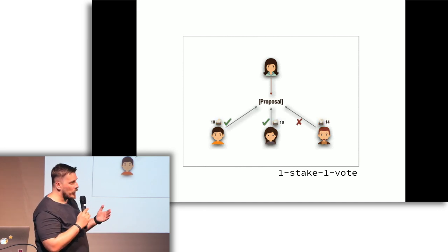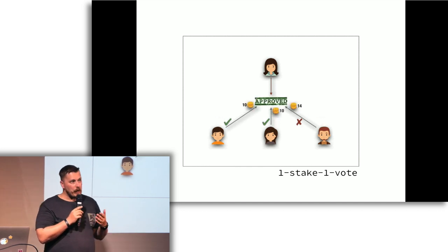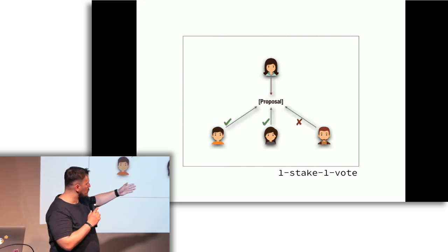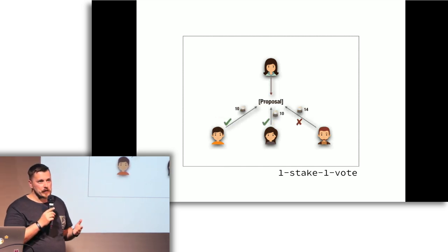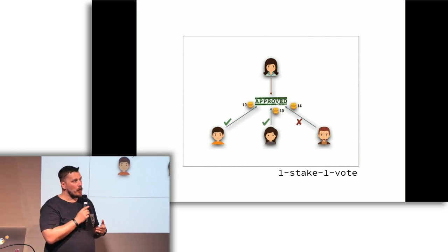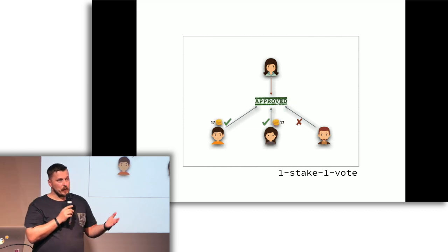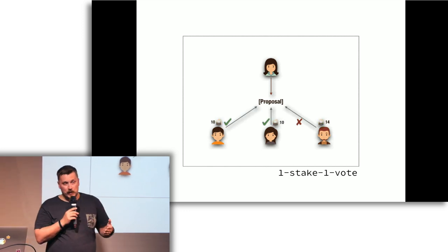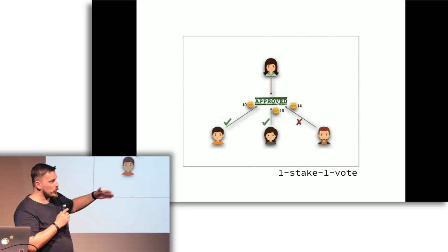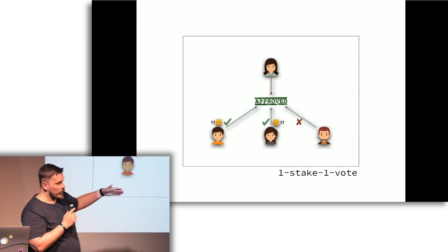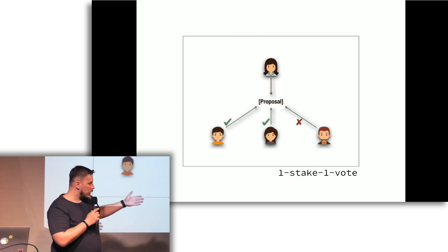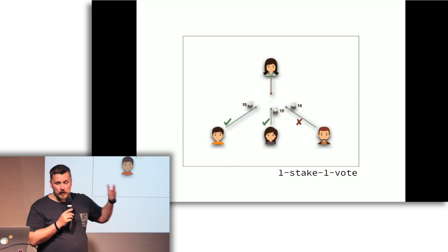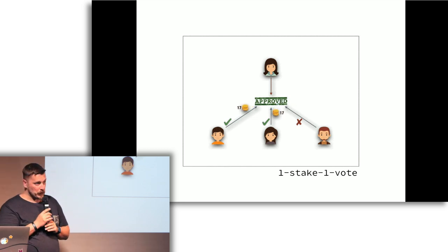Does anybody have an idea what the weakness of this protocol is? Audience: collusion! Yes, collusion. If I'm going to vote on a feature, I'd rather make sure I'm not losing my coins, so I'm probably going to do a lot of politics outside of the voting. Politics is always part of voting.